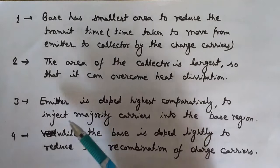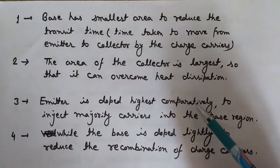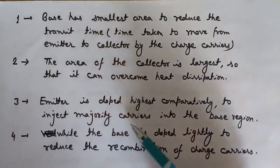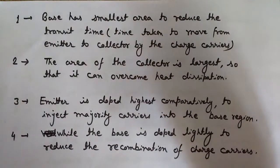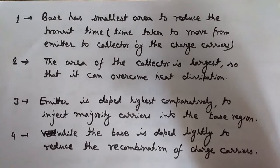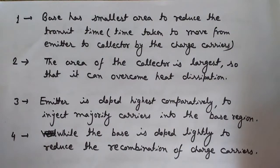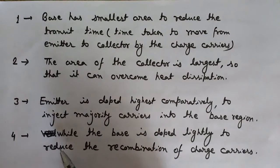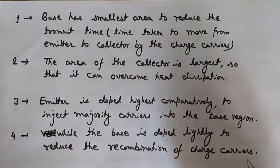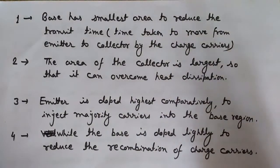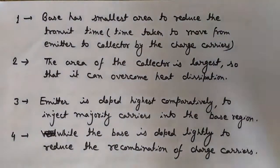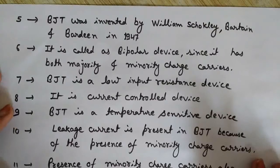The emitter is doped highest in comparison to base and collector. This is to inject the maximum number of majority carriers into the base region. High doping gives the emitter more majority charge carriers to emit. The base is doped lightest to reduce recombination of charge carriers with the opposite charge carriers — that is, the holes in the case of an NPN transistor.